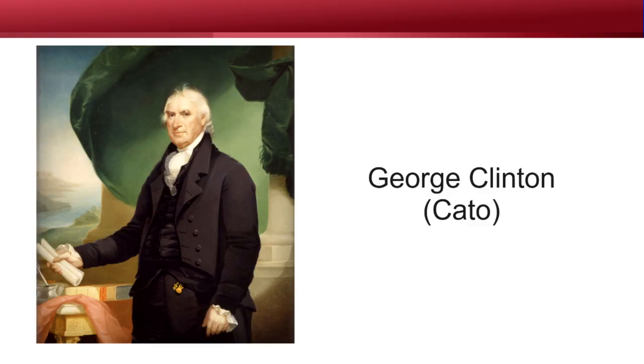In the special ratification conventions held in each state, the Federalists, who were advocates of the Constitution, were pitted against Anti-Federalists, who opposed the new plan of government. The Anti-Federalists, just one week after the text was first published, ran a series of Anti-Federalist articles written under the pseudonym Cato, who was probably George Clinton, governor of New York.